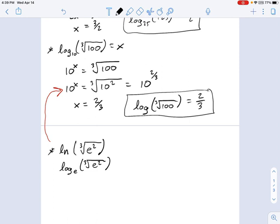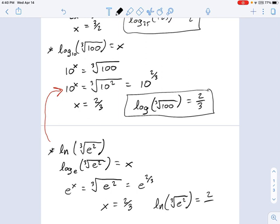But okay, so if I rewrite this as an exponent, it's going to say e to the x equals the cubed root of e squared. So e to the x equals the cubed root of e squared, which by the same reasoning as in the last one is e to the two thirds, which means x equals two thirds, which means the natural log of the cubed root of e squared equals two thirds.